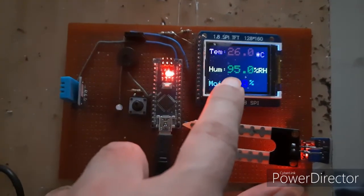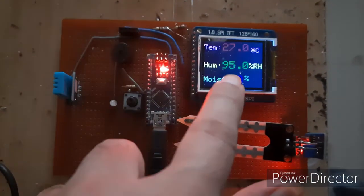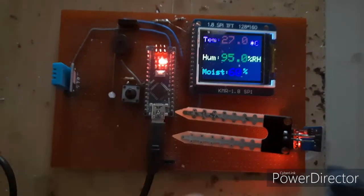Right now, room temperature is 27 degree, humidity level is 95 and soil moisture level is around 60.